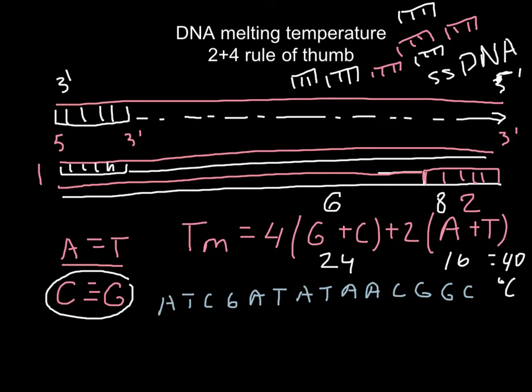...the point when in our solution we have 50 percent of the DNA present in double stranded form and 50 percent present in single stranded form. This is called melting temperature of DNA.